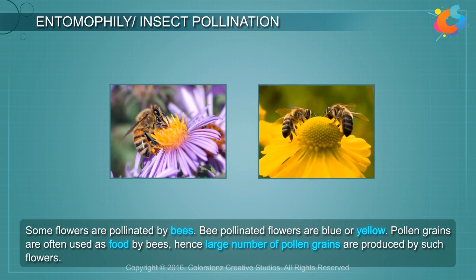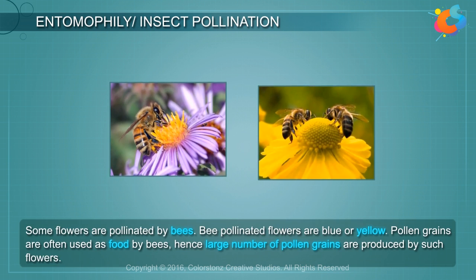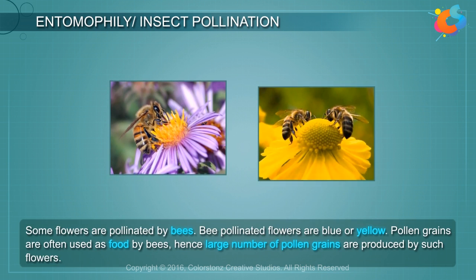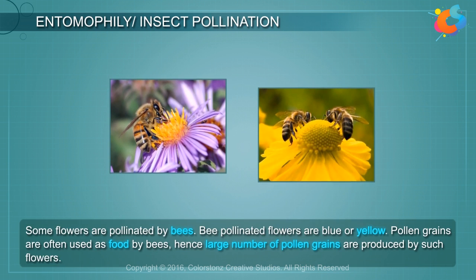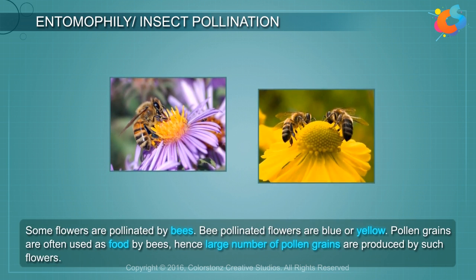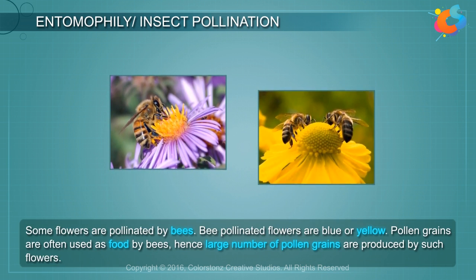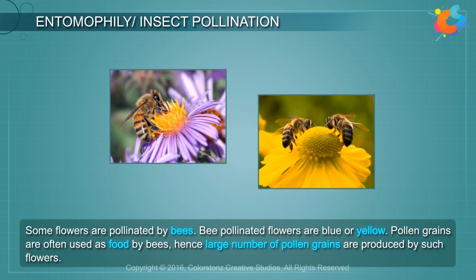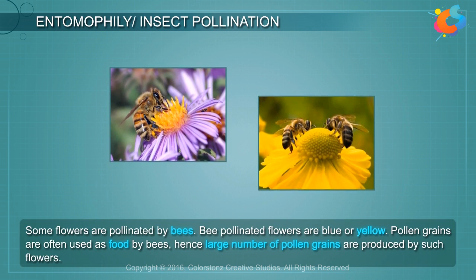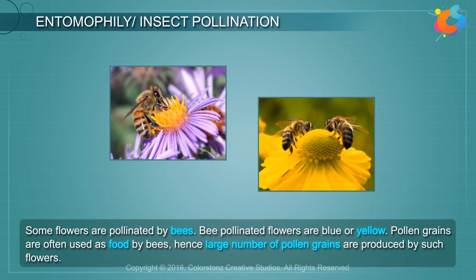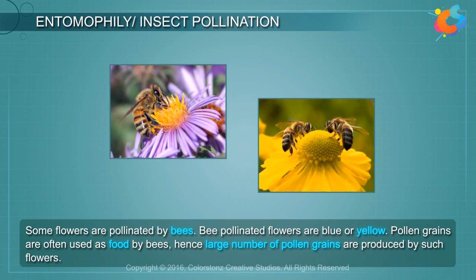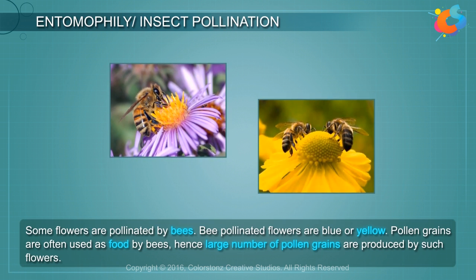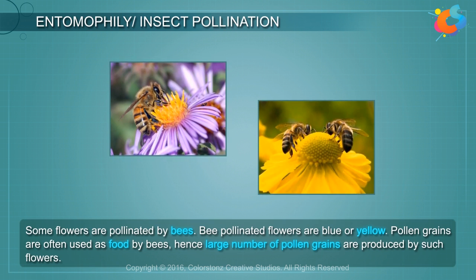Some flowers are pollinated by bees. Bee-pollinated flowers are blue or yellow. Pollen grains are often used as food by bees. Hence, a large number of pollen grains is produced by such flowers.